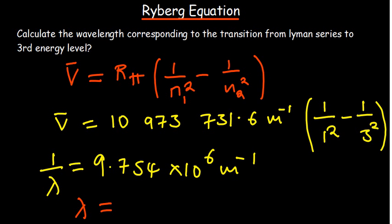Our wavelength is 1.025 by 10 to the power minus 7 meters. So that is how you apply the Rydberg equation to performing calculations.